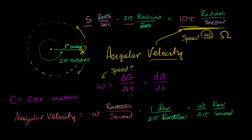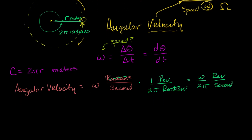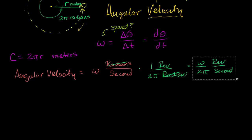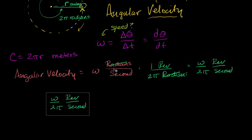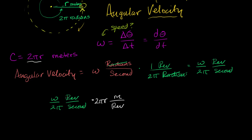We know how many meters we get per revolution: 2πr meters per revolution. So multiplying omega over 2π revolutions per second by 2πr meters per revolution — the revolutions cancel, and the 2π cancels with the 2π — we end up getting omega times r meters per second.